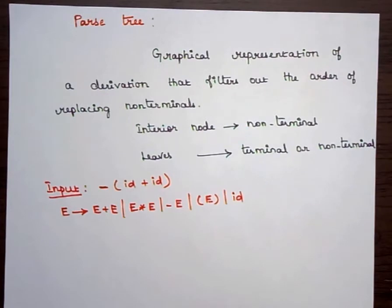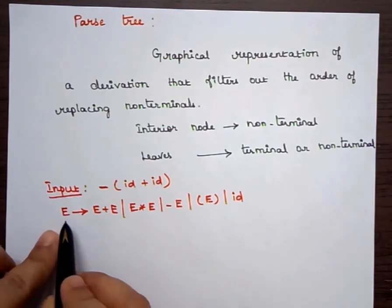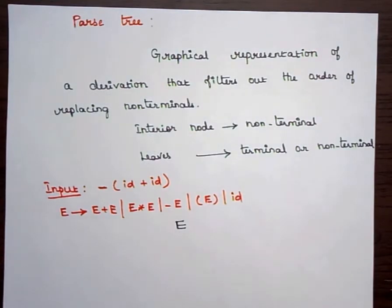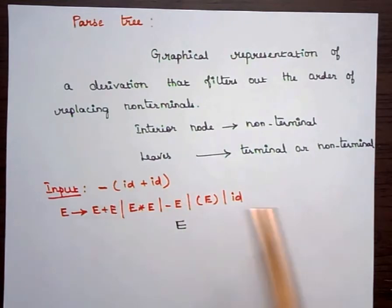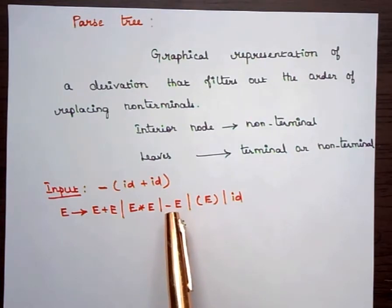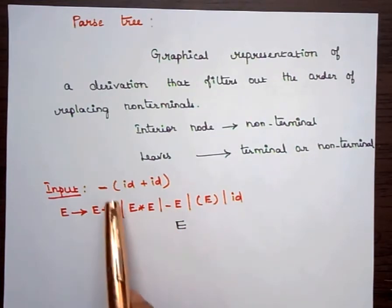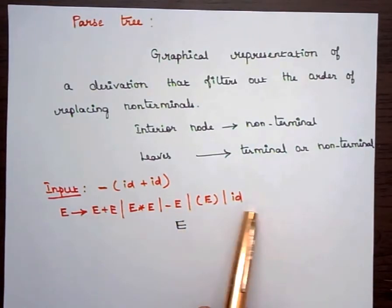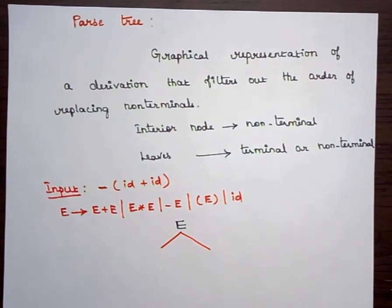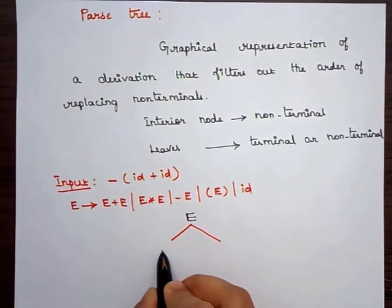For constructing the parse tree we need to start with the starting symbol of the grammar, which is E. Beginning with E, we need to derive it based on the given input. The input starts with a minus sign, so we look for which production can be applied. We apply the production E implies minus E.